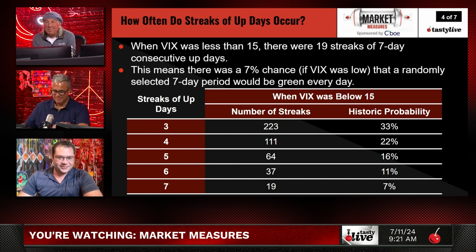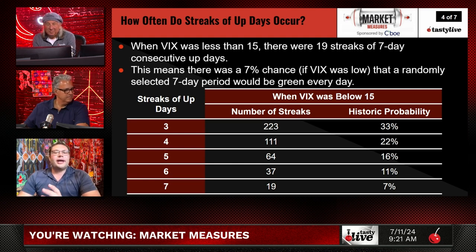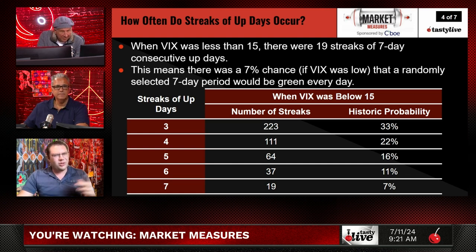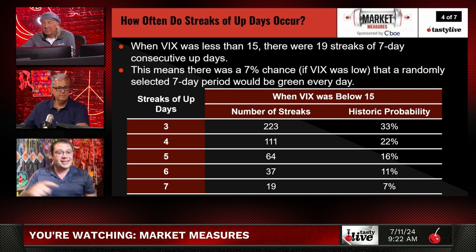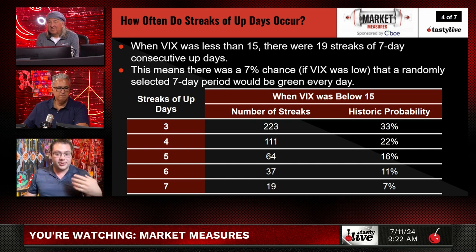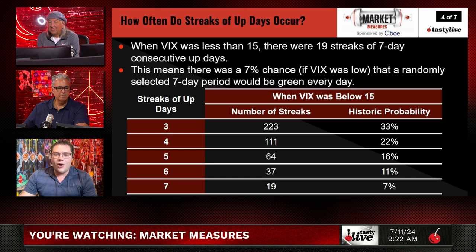That's a lot — that's about one per year. That means there's a 7% chance that, in a low VIX environment, a randomly selected seven-day period would be green every day. I'm surprised it's that high. So it gets really interesting, because when we think of the market as 50-50, we kind of discount the actual probability of streaks happening. Looking at the seven-day streak probability — 19 streaks since 2004 — if you're looking at the next seven days, what's the chance they'll all be green? In low IV, it's 7%. For six days it's 11%, and 16% for a five-day period, which is pretty high.